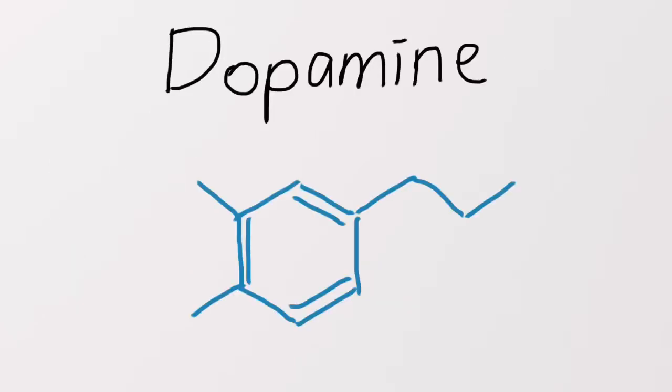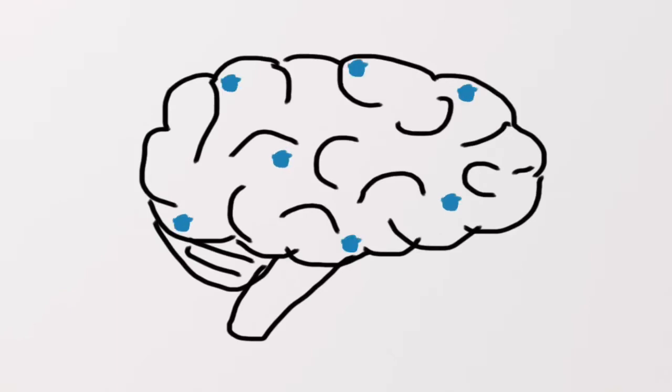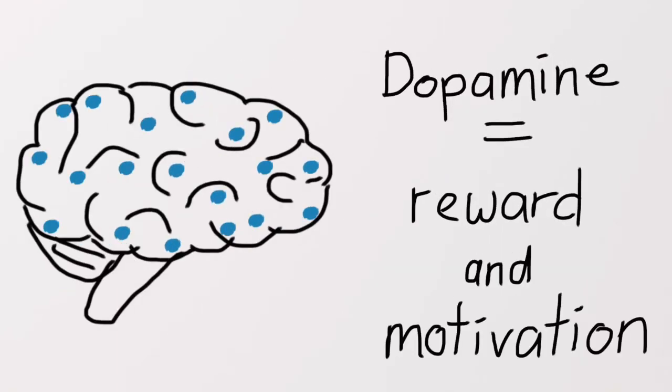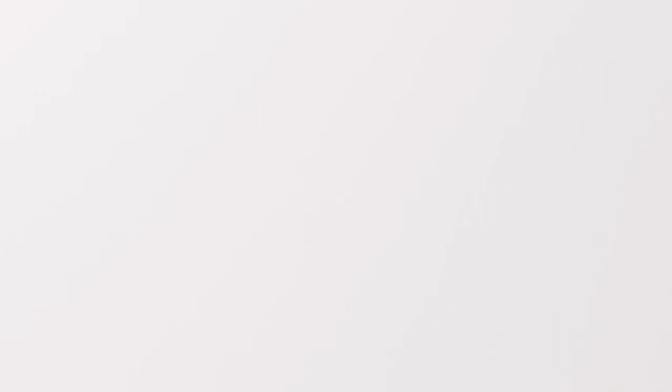Dopamine, another neurotransmitter, increases when we start to feel a romantic attraction. It's a chemical that's associated with regions of our brain that deal with reward and pleasure, and it motivates us to pursue pleasurable experiences, like finding a partner and feeling desired.